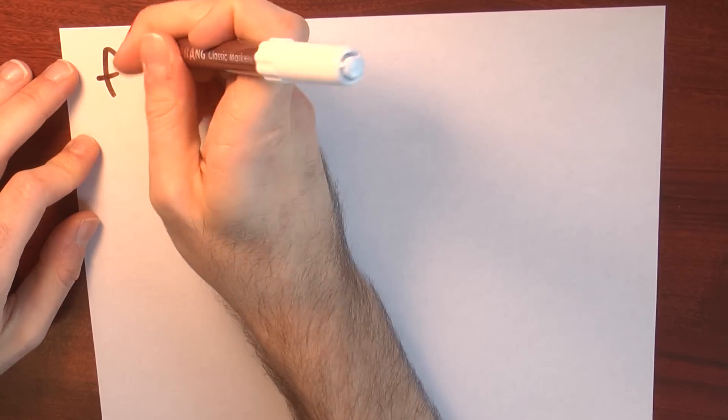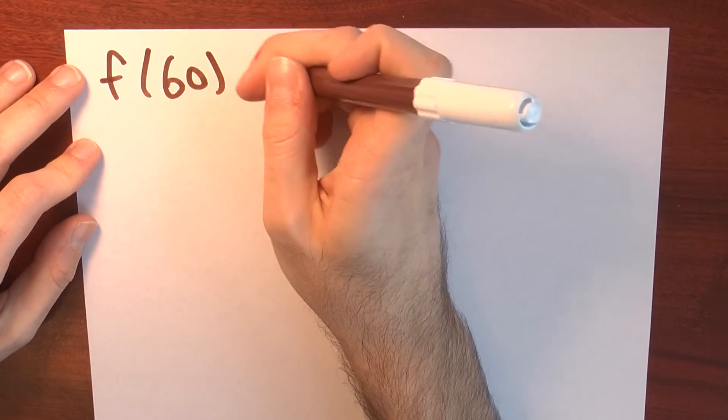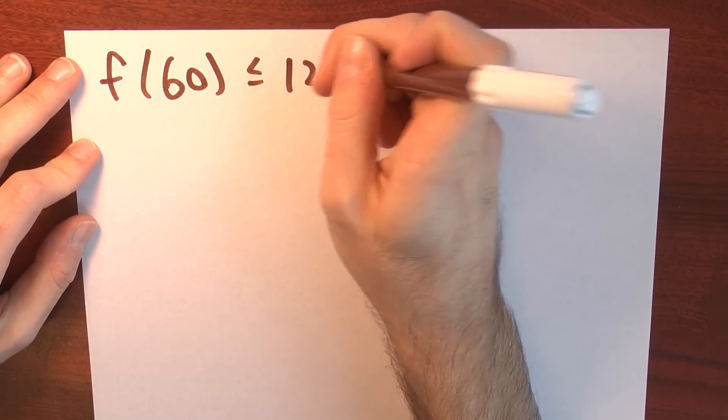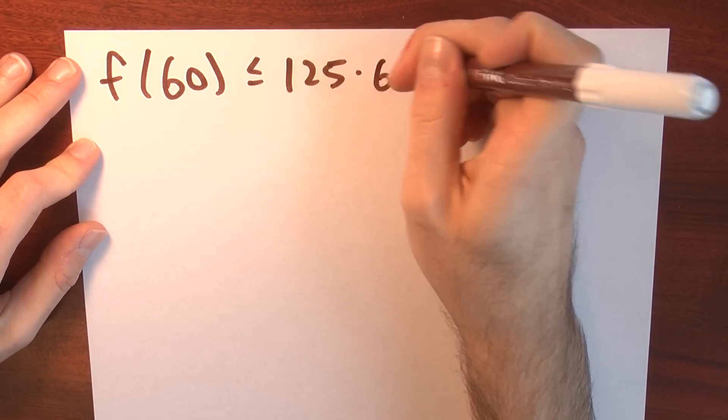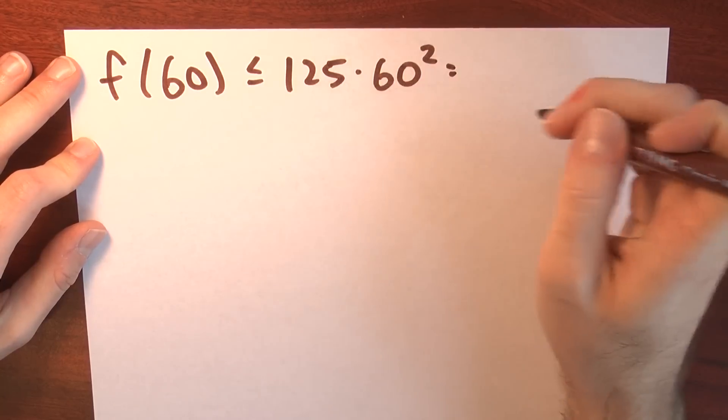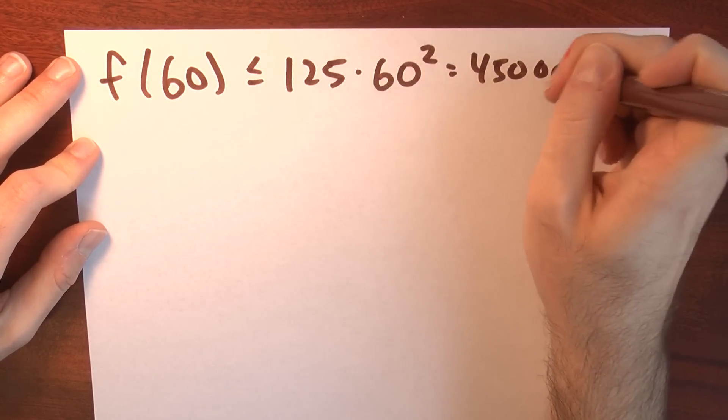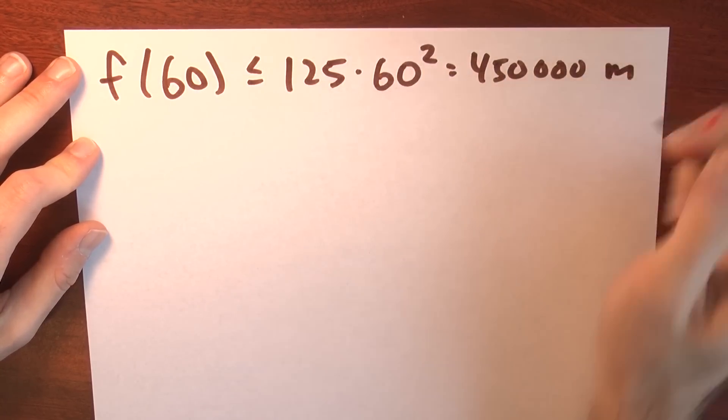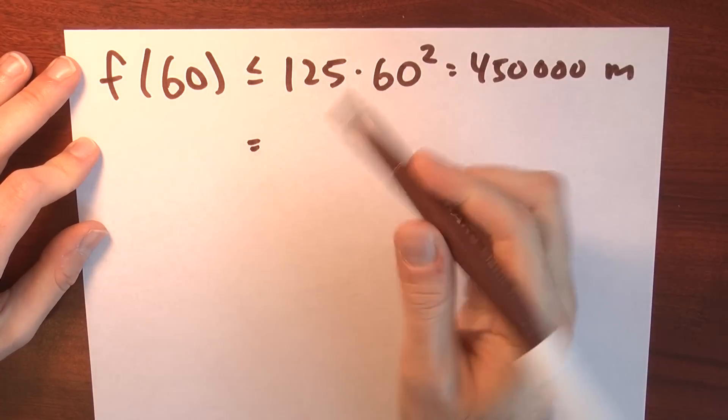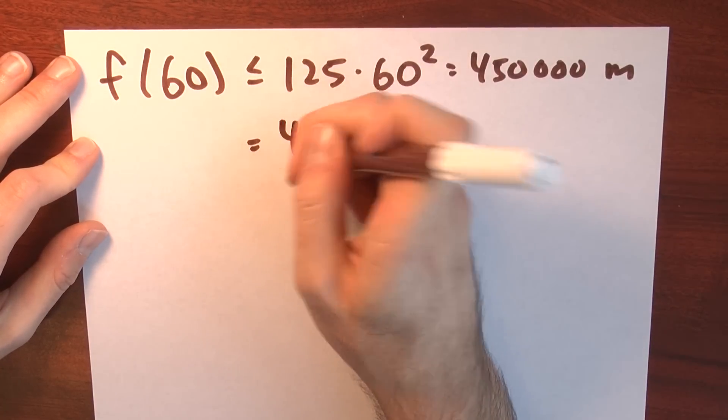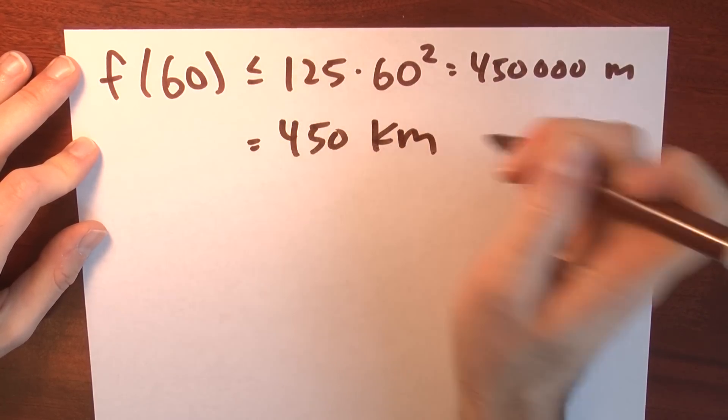I gave us one minute of travel time. So f of 60 seconds is no bigger than 125 times 60 squared, which is equal to 450,000. And this is meters, so f of 60 seconds is no bigger than 450 kilometers.